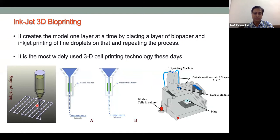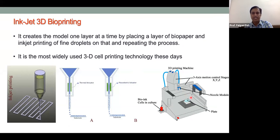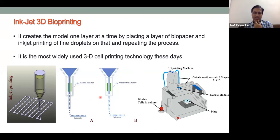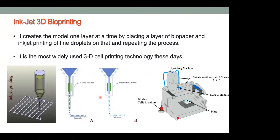The very first attempt at inkjet bioprinting was done by Thomas Boland, who modified an HP office inkjet printer to print cells. In a regular office printer the paper tray is replaced with a stage where a cell culture plate, well plate, or glass plate can be placed depending on the application.